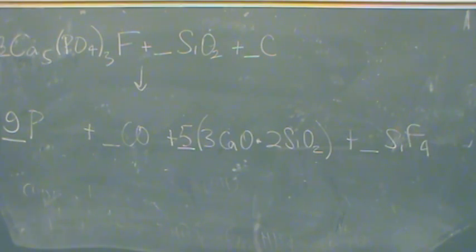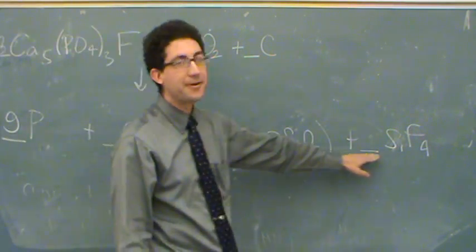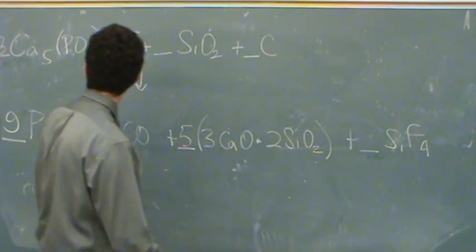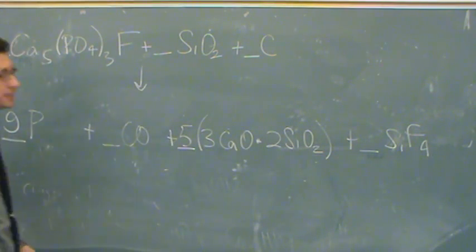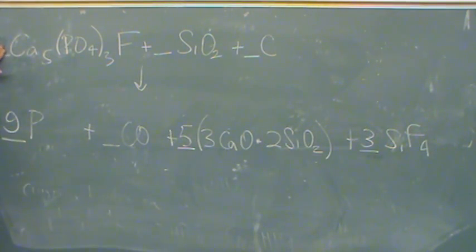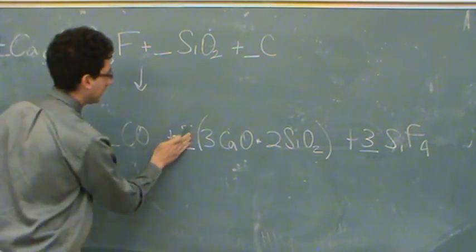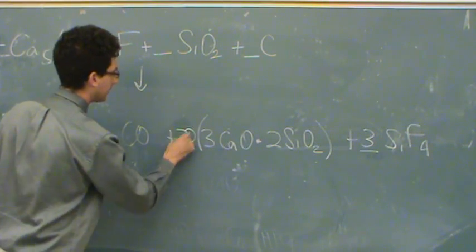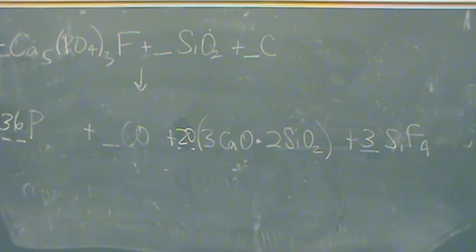Fluorine — we got three fluorines here, right? I've got four here. So the least common multiple is twelve, that means I'm going to put a three here and bump this up. I have to multiply by four everywhere, so now I've got thirty-six here and I need twenty here. I needed to balance the fluorines, but the fluorines are going to mess me up for the calciums and the phosphorus, so I had to change that.